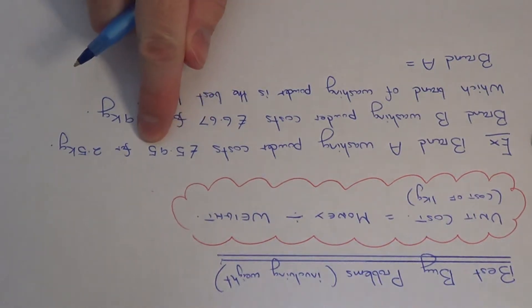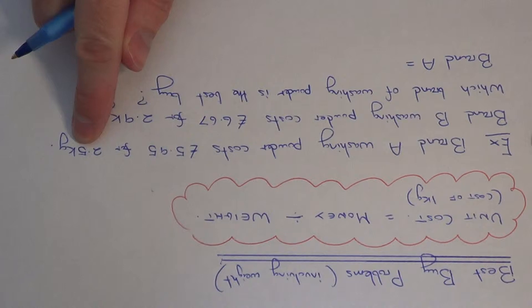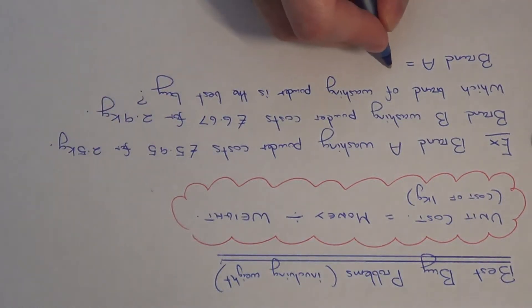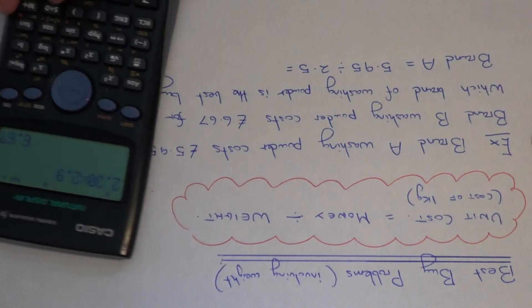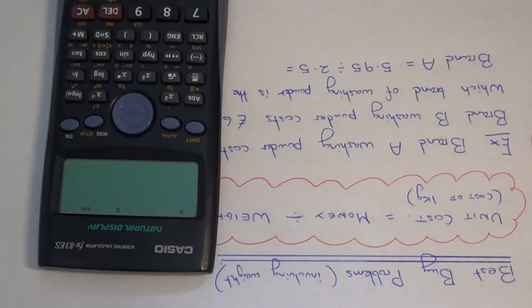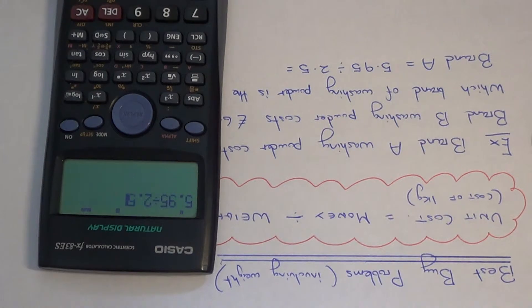So brand A washing powder costs £5.95 and that's for 2.5 kilograms. So we need to divide £5.95 by 2.5. So if you just put that in on your calculator, £5.95 divided by 2.5.